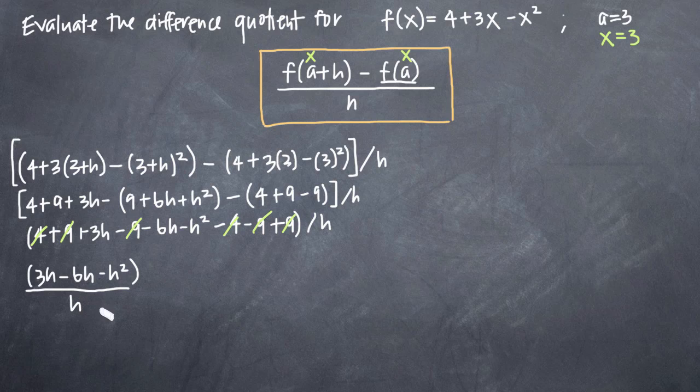Now that we have a bit more room, we'll bring the h underneath here. Clearly, we can simplify the 3h and -6h to get -3h - h² all divided by h. Now we can divide through both numerator and denominator by h. We'll see that they cancel, and the squared will go away. We'll just be left with -3 - h.